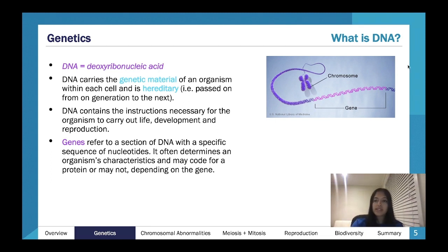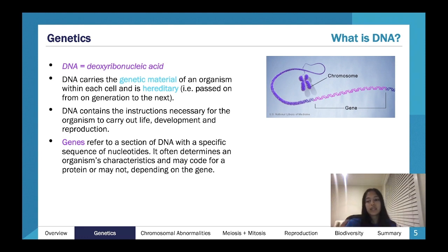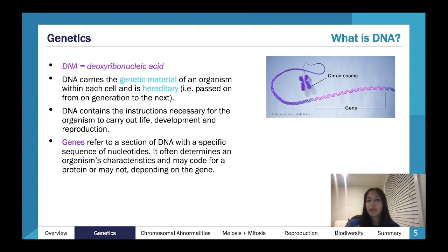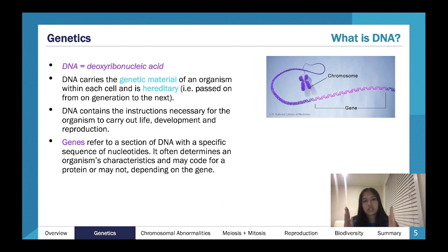DNA — the NA stands for nucleic acid — is a really long, big molecule. A gene is a small section of that DNA that codes for a specific protein. It may determine characteristics, produce something within or external to the cell — a protein, hormone, or enzyme. Some sections of DNA may not code for anything meaningful. A gene is just a small section of the larger chromosome or nucleic acid.